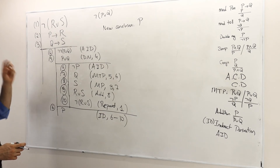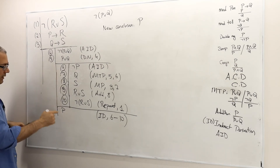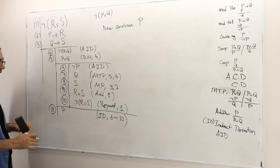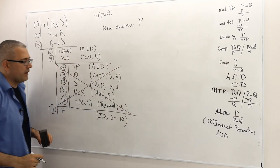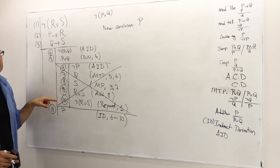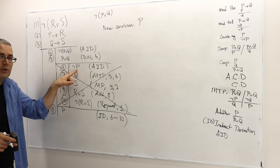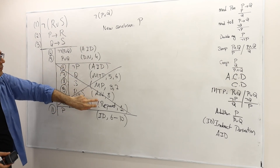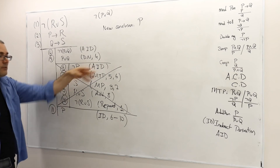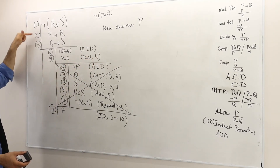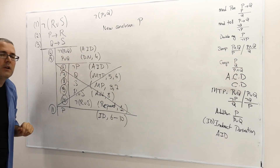Once I close this box, this sub-proof, I can cross out everything inside it, because I can no longer use those statements — they were correct conditional on not P being true, but it's not. So everything in the inner box is false and unusable. However, I can still use lines one, two, three, four, five, and eleven, because I haven't yet closed the outer assumption for indirect derivation.